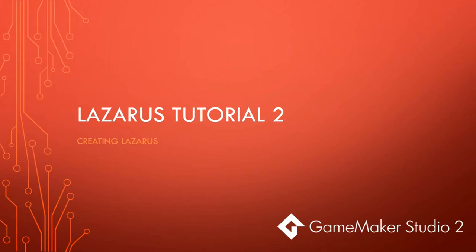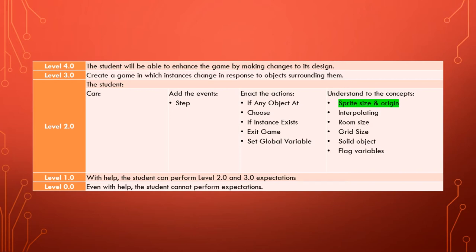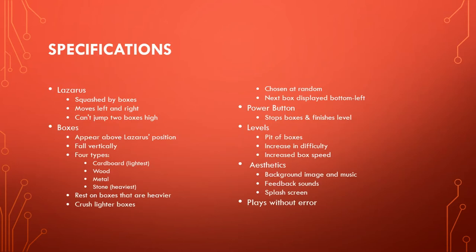Here we are with the second video in this tutorial series, which is our third video series on GameMaker Studio. Last video covered my ramblings about sprite size and origin — we didn't address any specifications because we were working on concepts. In this tutorial, we're going to apply those concepts of origin, sprite, and sprite size to create Lazarus, who moves left and right and gets squashed by boxes.